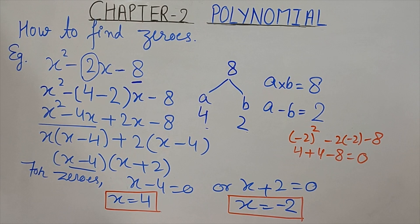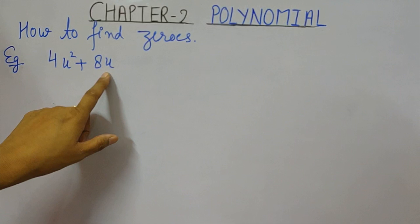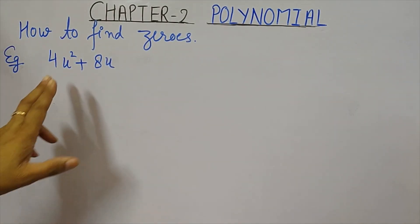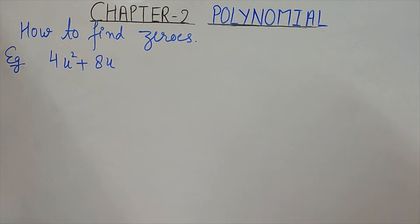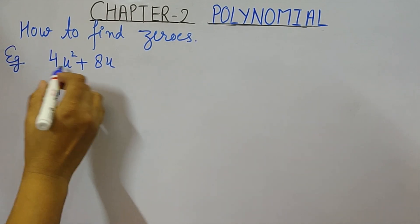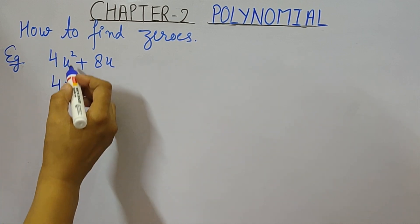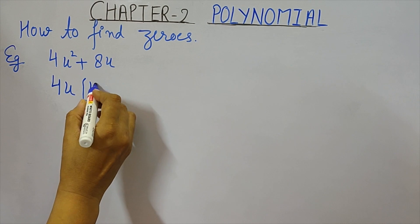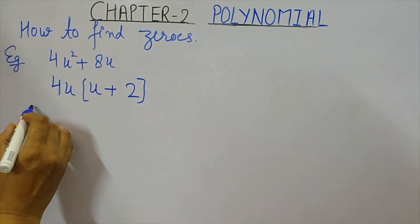Let us take one more example: 4u² + 8u. Here there are only two terms, so middle term splitting is not applicable and no identity fits. We can take common factors: 4u is common, giving 4u(u + 2).